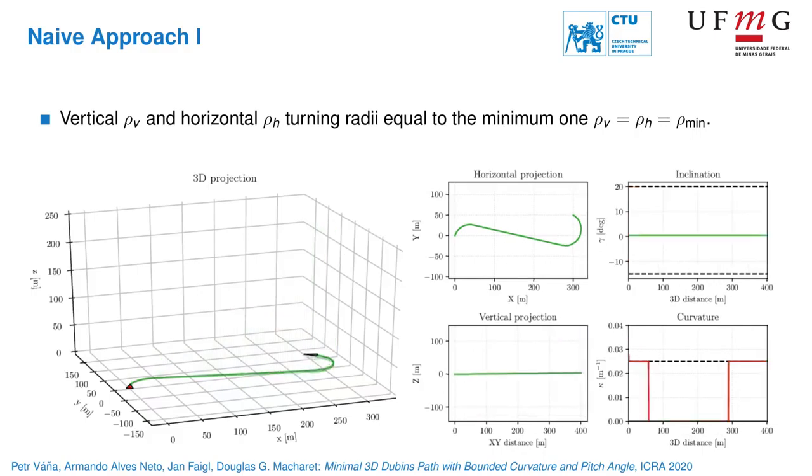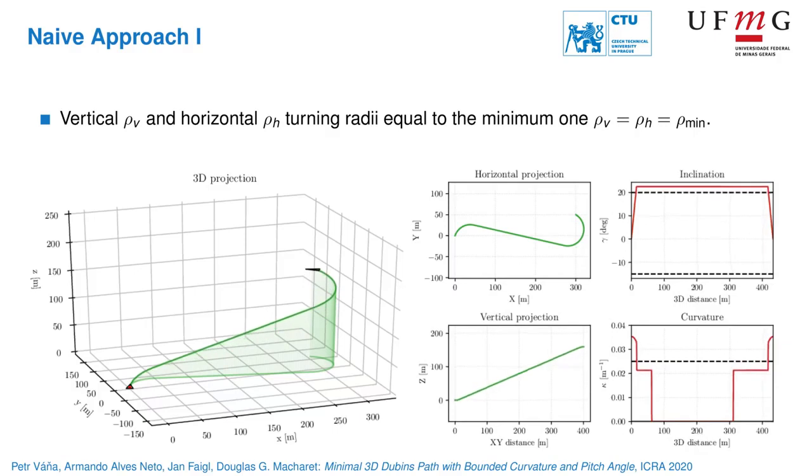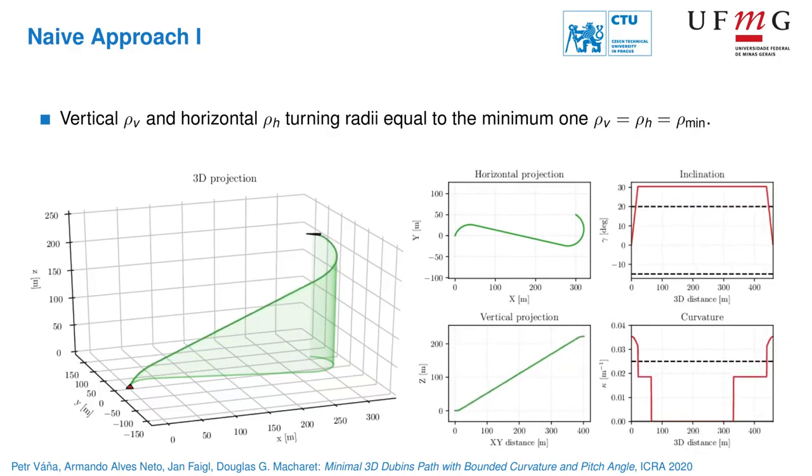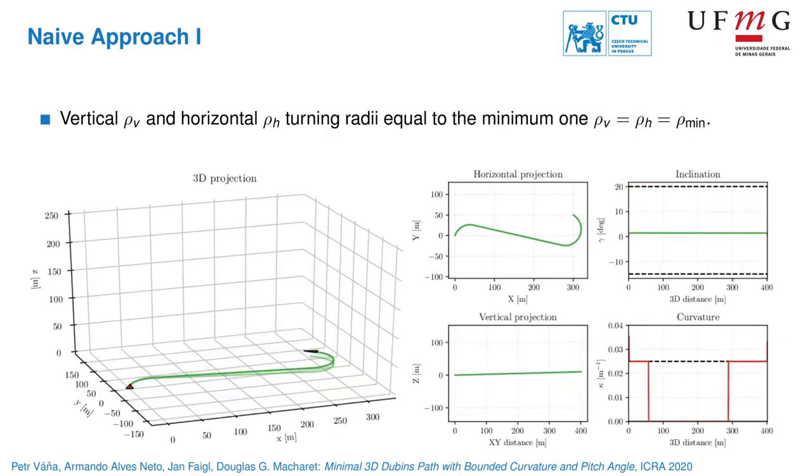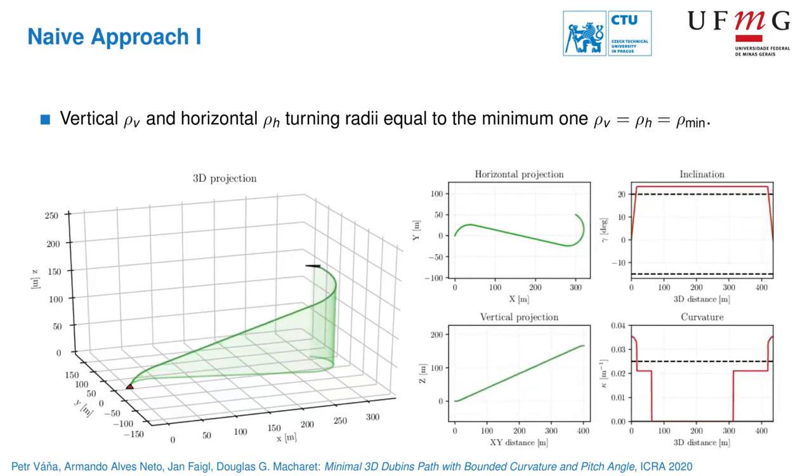However, for the vertical profile, we need to check the pitch angle of the straight segment to be within the given interval. When the altitude difference is zero, the proposed approach has the same result as the Dubins path in 2D.